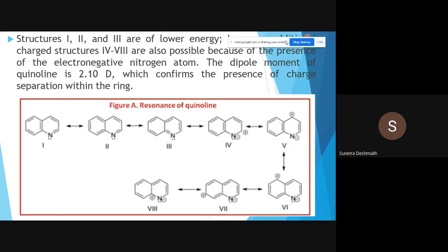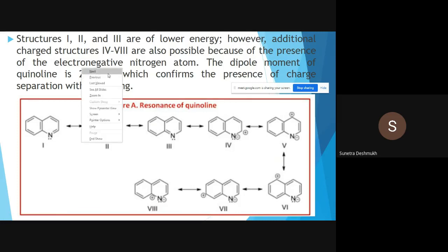Resonance structures of quinoline: here are the resonating structures I have given. There is nothing different, but they have changed the positions of the carbon-carbon double bonds in the benzene ring. Pay attention to how three different structures they have drawn for resonating. We have to see them as resonating structures of quinoline. Structures first, second, and third are of lower energy. They are more stable as they are lower energy. However, additional charged structures fourth to eighth—now they have created additional charges on the electronegative nitrogen atom. The dipole moment of quinoline is 2.10 Debye, which confirms the presence of charge separation within the ring.